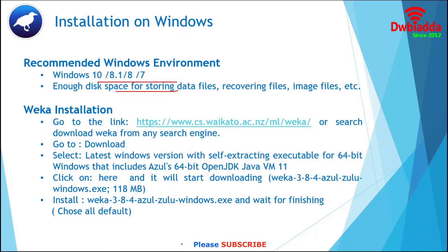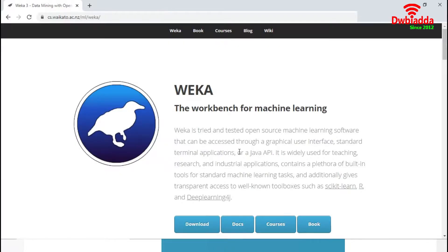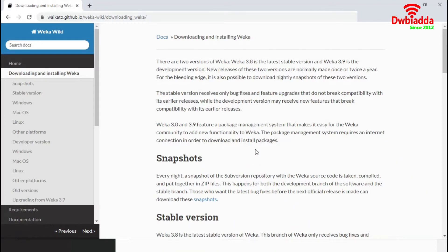We will follow the below steps to download and install Weka on Windows. We can either directly go to the Weka website or search for 'download Weka' from any search engine. In our example, we will use Google Chrome and directly go to the Weka website. This is the Weka official website. We can get all kinds of Weka-related information from this webpage. Now we will go to the download option, which will land us on the downloading and installing Weka page.